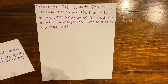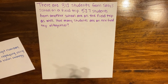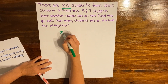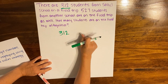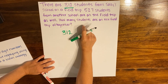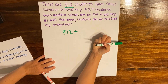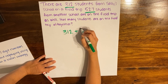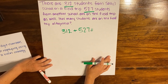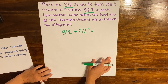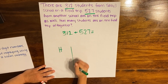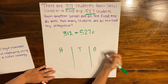Now that I've figured that out, I can look at what my number sentence is going to be. I see that there are 312 students from Sally School and 527 students from another school, so I'm going to write an addition sentence: 312 plus 527. To help organize my thoughts, I'm going to draw a place value chart with hundreds, tens, and ones.